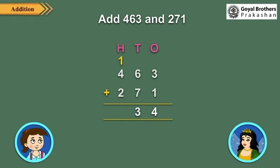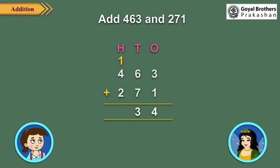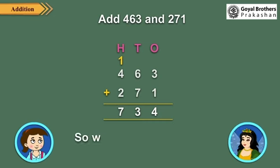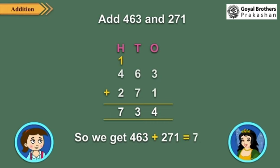Now add the hundreds. 1 hundred carried over, plus 4 hundreds, plus 2 hundreds equals 7 hundreds, so write 7 under the hundreds column. So we get 463 plus 271 is equal to 761.